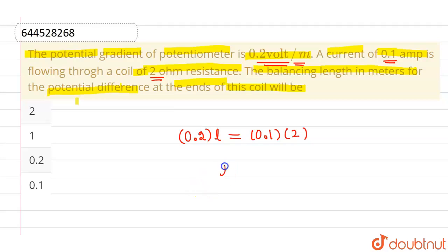So from here, I will be getting length as 1 meter on simplifying. So, this is our answer which is given in option 2. Option 2 is correct and rest all options are incorrect. I hope you understood. Thank you.